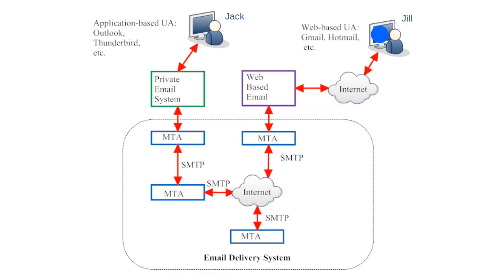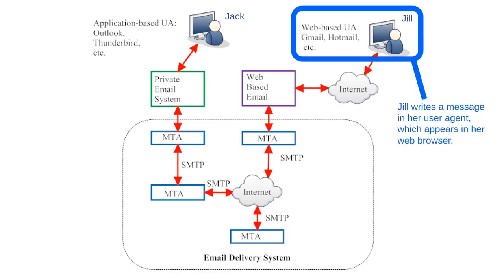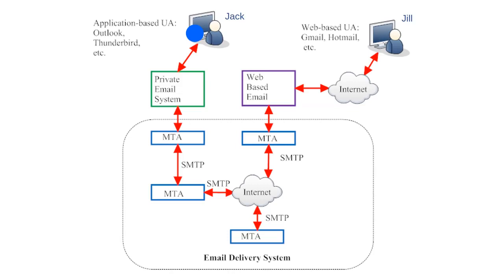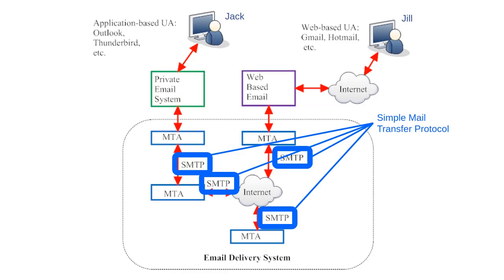If Jill wanted to send a message back to Jack, the whole process would be reversed. Jill would write a message in her user agent, which appears in her web browser. When she hits send, the email would travel through the internet to her web-based email client, which would forward it to a message transfer agent. The message would travel across the internet through various MTAs, and the final MTA would keep the email in storage until Jack's user agent requested access to new incoming emails. In this illustration, the connections between message transfer agents are labeled SMTP — Simple Mail Transfer Protocol — which is the communications protocol that MTAs use to communicate with each other. You might think of SMTP as the language of email servers, similar to how internet protocol is the language of the internet.